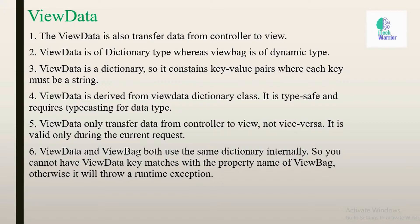Now let's move to ViewData. First point: ViewData also transfers data from controller to view. Second point: ViewData is of a dictionary type, whereas ViewBag is of dynamic type. Third point: ViewData is a dictionary, so it contains key-value pairs where each key must be a string. Fourth point: ViewData is derived from the ViewDataDictionary class — it is type-safe and requires type casting for the data type.